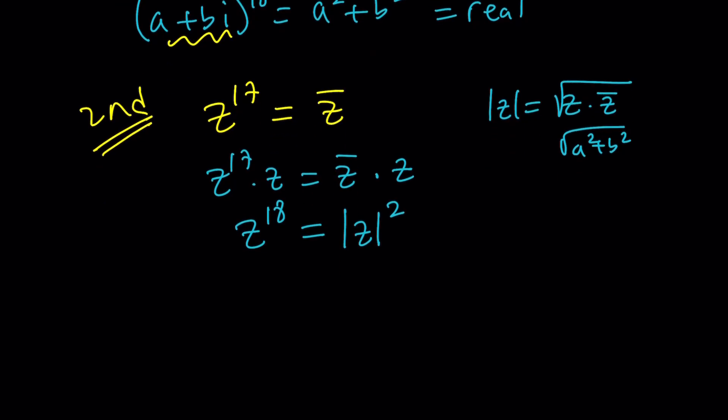Now, we've got an interesting equation because we have Z to the 18 on one side and absolute value of Z squared. Again, this is real, so Z is a special number whose 18th power is always real. Now, here's one thing we can do. Focus on the absolute value of Z.